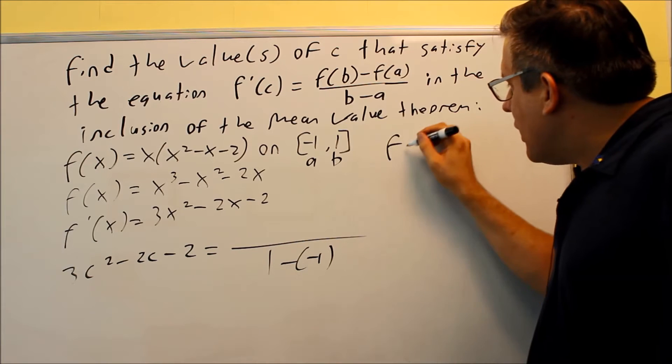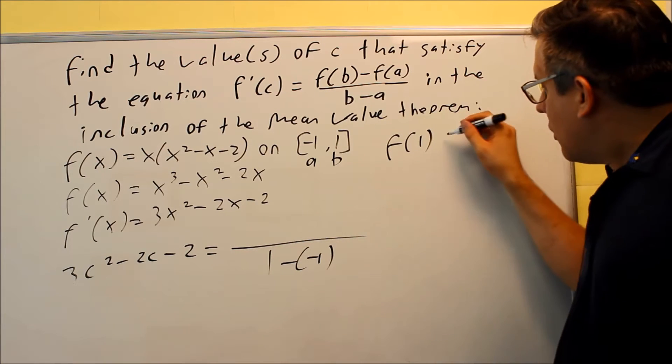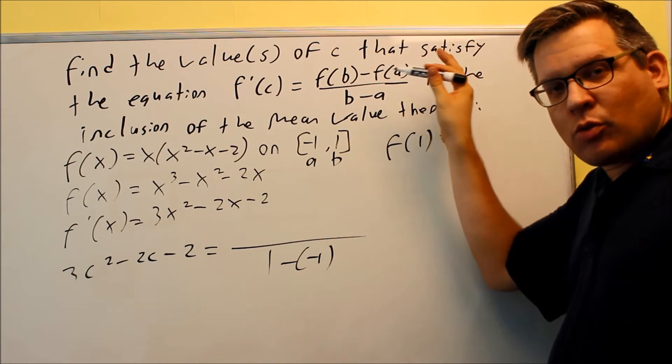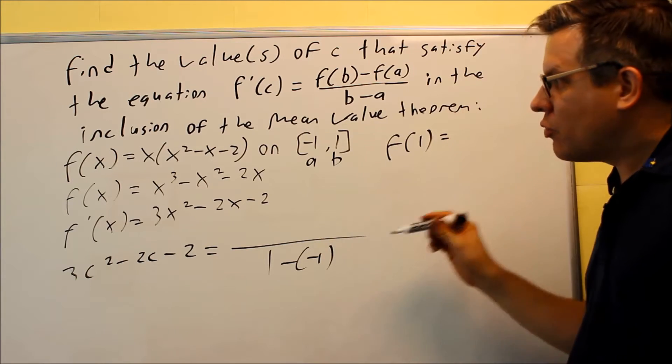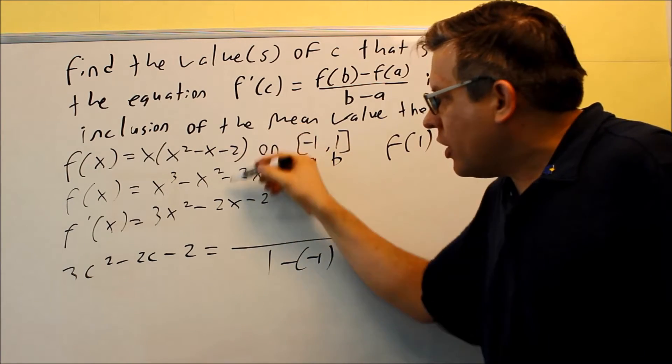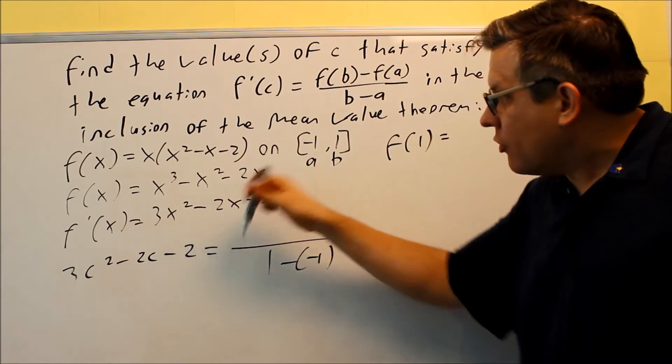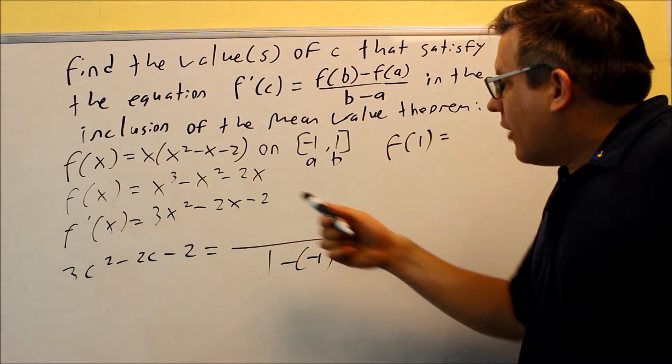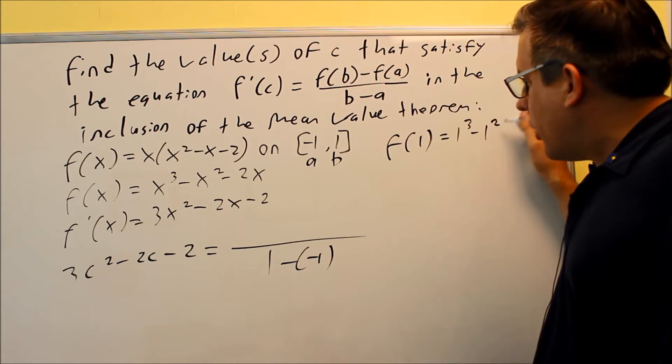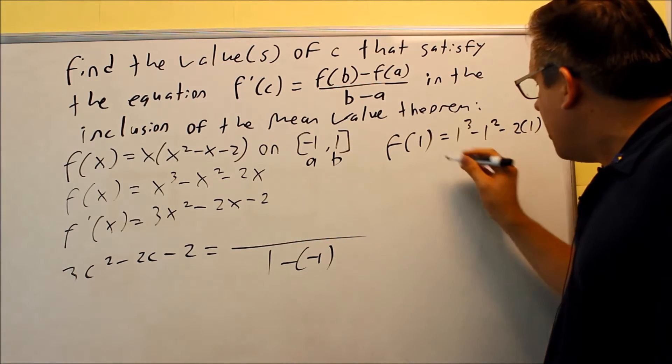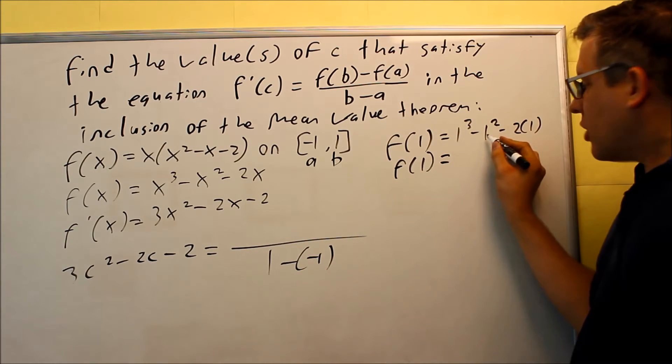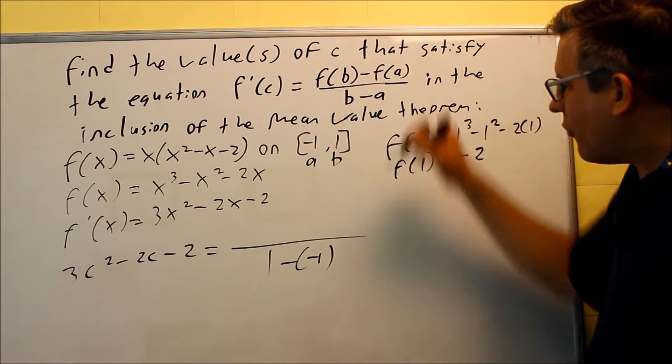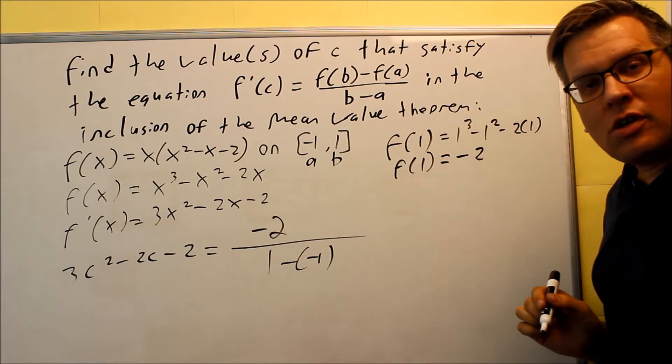First, let's find F of B. That would be F of 1. So F of 1, I need to put a 1 in. Now remember, this formula on the right-hand side says that we're working with the original function. So we have to use either one of these first two. You don't want to use this one because that's the derivative. You want to use one of these first two. I'll just use the second version there. I have a 1 in here. I have 1 cubed minus 1 squared minus 2 times 1. If I work all that out, 1 minus 1 is 0. I get negative 2. So therefore, F of B is negative 2. I can just put that into the formula just like that.